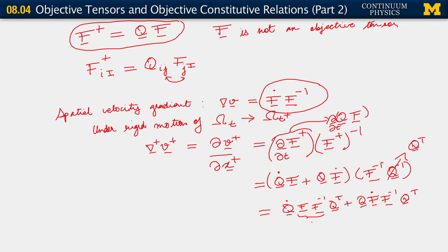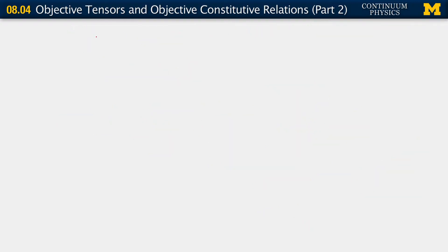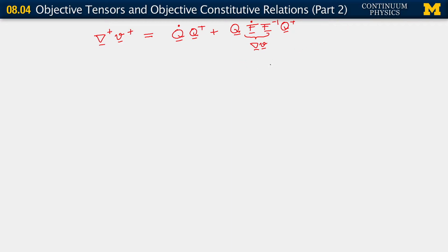Here we have the isotropic tensor. When we put things together, the transformation of the spatial velocity gradient tensor goes as q-dot q-transpose plus q times F-dot F-inverse q-transpose — and this second part is our original spatial velocity gradient tensor. So our spatial velocity gradient tensor does not transform by the rules of objectivity, because it would be fine if it were just the second term, but we have the first term in there as well. It is not objective.